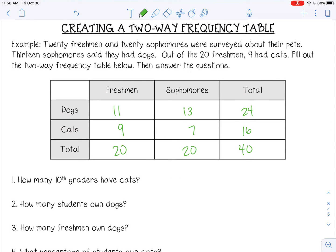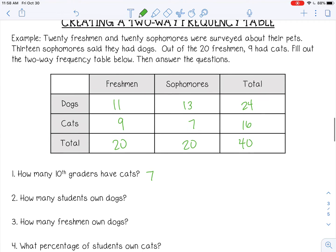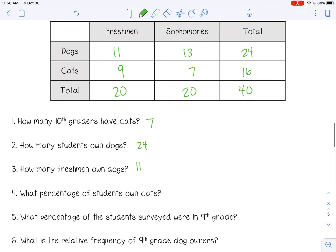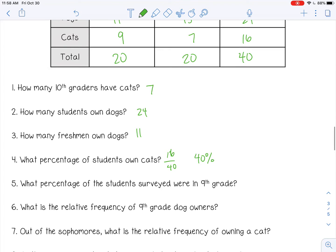How many 10th graders have cats? How many sophomores have cats? That would be seven. How many students own dogs? That's going to be 24. How many freshmen own dogs? Freshmen that own dogs, it's 11. What percentage of students own cats? So 16 students own cats out of 40 students total. We need to divide, 16 divided by 40, and you get 0.4 or 40%. Be careful, that's not 4%, it's 40. What percentage of students surveyed were in the ninth grade? 20 were freshmen out of 40 total, and we know that's 50%, so half.